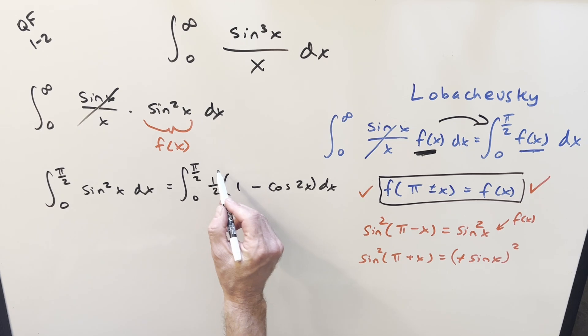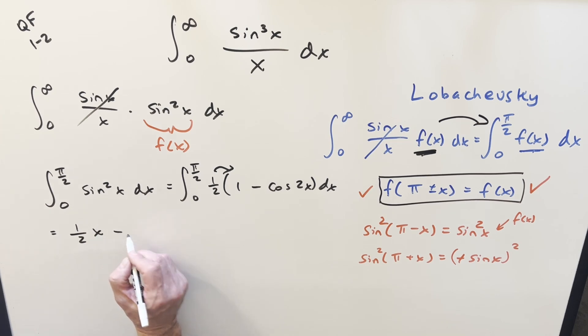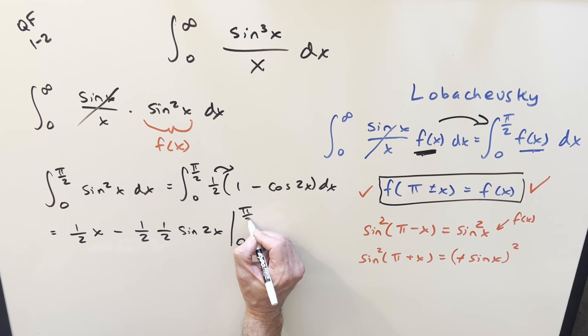I'll go ahead and integrate it. You can kind of distribute the 1 half in, bring it out, whatever you feel like. So when we integrate 1 half, we're going to get 1 half x minus here, we're going to have 1 half. Integral of this is going to be sine 2x, but we need to bring another 1 half out. So we'll have another 1 half here, and we just need to evaluate from 0 to pi over 2.